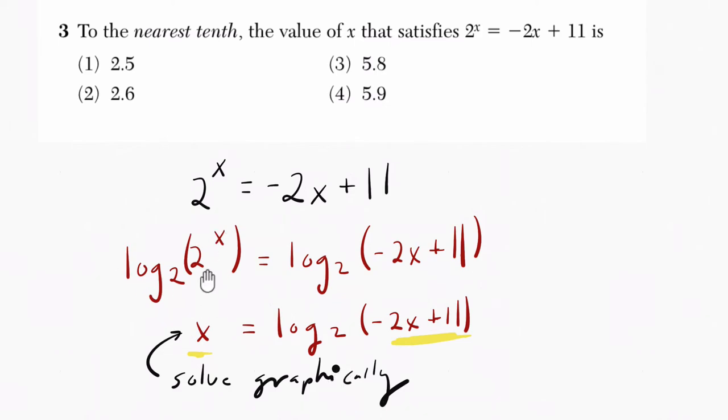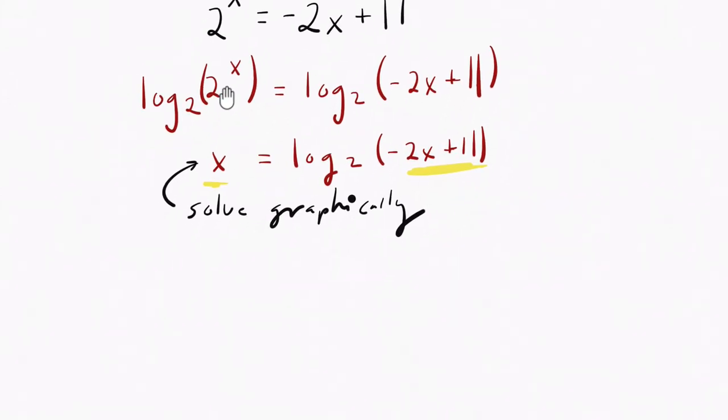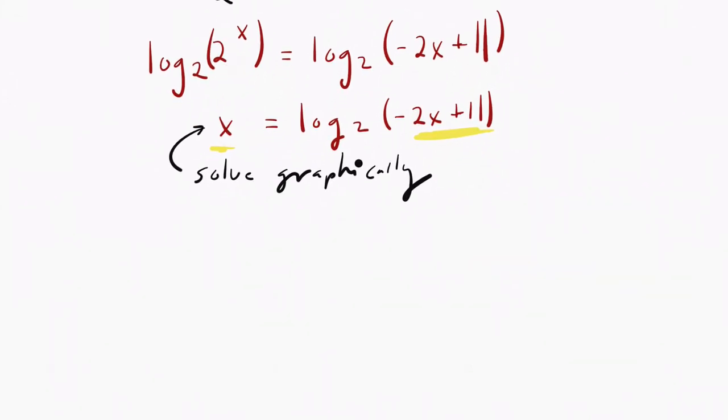Well, before we even get into the exact answer of it, let's just say we should think about what's happening. So if we sketch out our y and our x axis and we think about what's going on here, I would say, well, we've got to find when 2 to the x equals negative 2x plus 11.